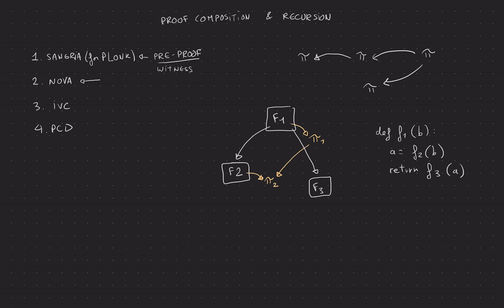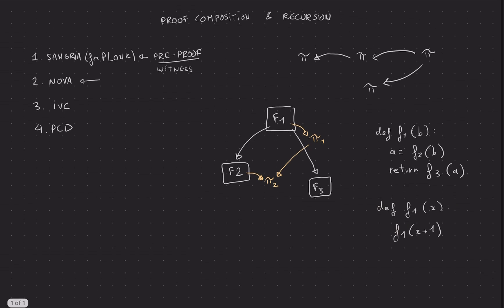The recursion part is basically the same as recursion in a programming language. If you have a function F1 that calls F1(x+1), you're recursing — your function calls itself. That's basically what we mean by recursion in a proof system: it's the proof of a function being used inside the proof of the same function, used inside the proof of the same function, and so on. You can continuously do a state transition and keep executing the same logic on top of the previous step.